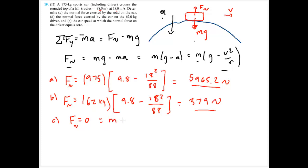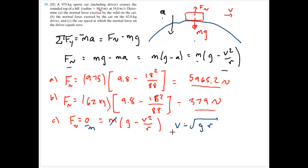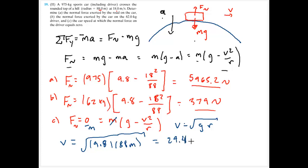Setting mass times (gravity minus v squared divided by radius) equal to zero and dividing by mass, we solve for velocity. Moving v squared times radius to the other side and taking the square root gives velocity equal to the square root of g times radius: square root of 9.8 times 88 meters, which equals 29.4 meters per second.